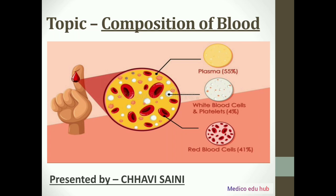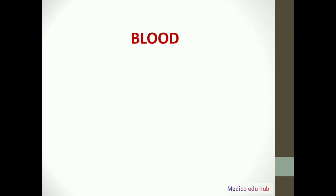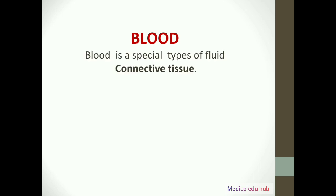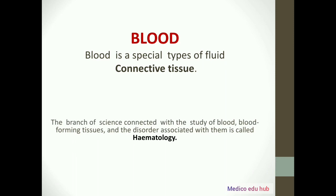We will cover the complete composition of blood in this video. So without wasting time let's proceed ahead. Before knowing the composition of blood we should know what is blood. Blood is a special type of fluid connective tissue. The branch of science connected with the study of blood, blood forming tissues, and the disorders associated with them is called hematology.